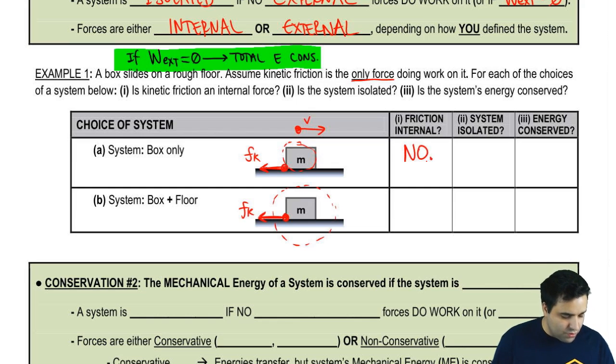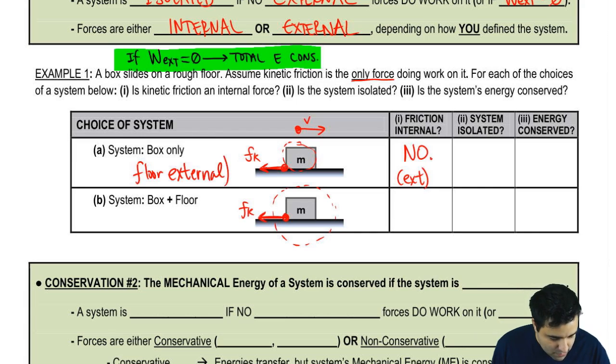Friction is external to the system because we determine that the system is just the box. And the friction is sort of outside of the system because it's between the box and the floor. And the floor is not part of the system. Here, the floor is external to the system.